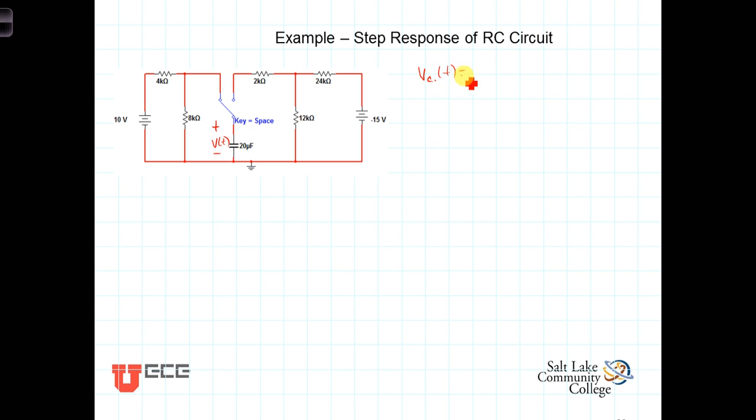plus the initial voltage, which is V of zero plus, minus the final voltage, which is V of infinity, E to the minus T over tau.